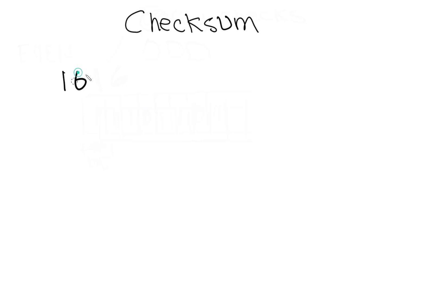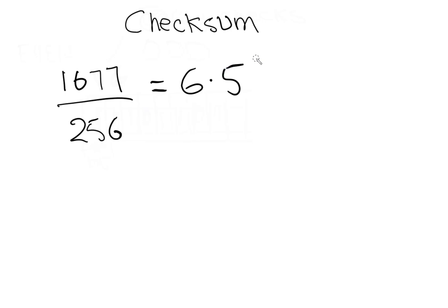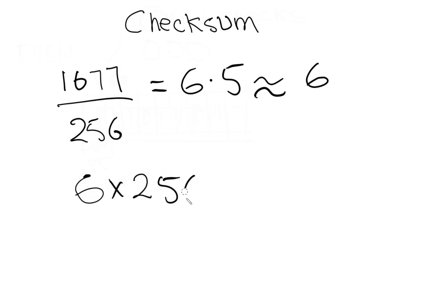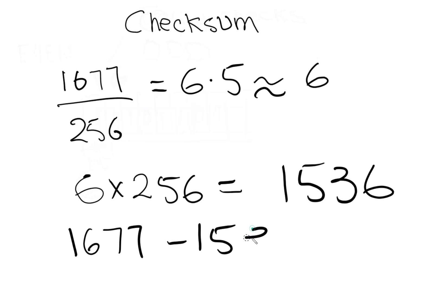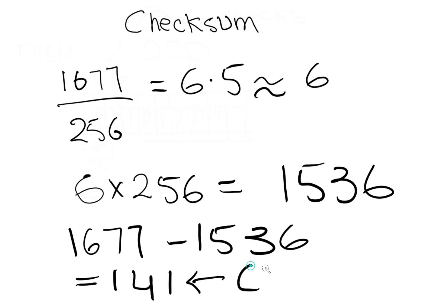Now let's do a calculation of checksum. For example, we have the value 1677. We divide this by 256 and get 6.5. We round the answer down to the nearest whole number, which is 6. Now we multiply this number by 256, which gives us 1536. We subtract this from the original number and get the answer 141. This number is the checksum calculated for the number 1677.